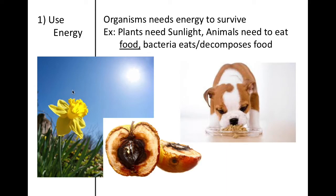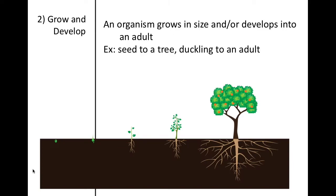For example, plants need sunlight. Animals need to eat so that they can grow. Bacteria eat food and help in the decomposition of that food, but they use it in order to live. Living organisms need to get energy in order to grow and develop.